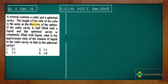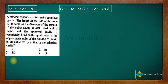The problem is talking about a mineral which consists of a cavity. The meaning of cavity is a hole — like the cavity in a tooth. So here the mineral has two types of holes: one in the shape of a cube and another in the shape of a sphere. The problem tells us that the length of the cube is the same as the diameter of the sphere.